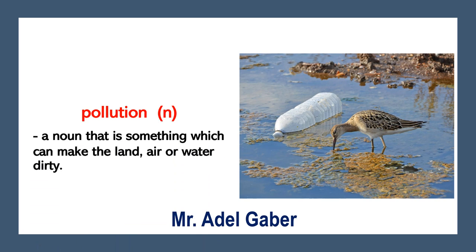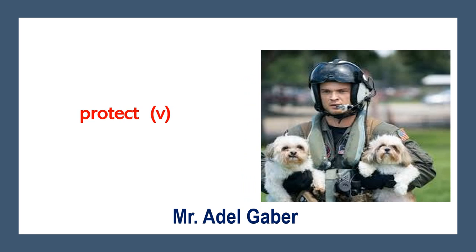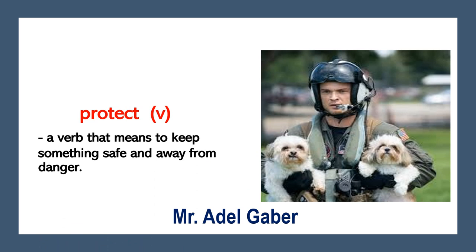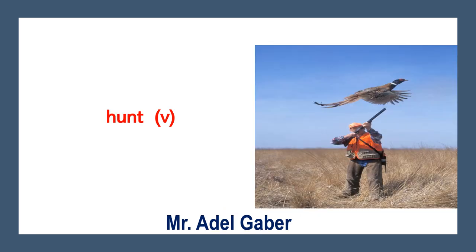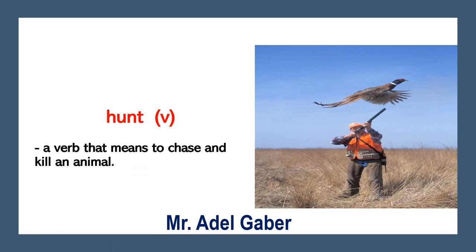Pollution is a noun — something which can make the land, air, or water dirty. Look at this picture: Protect. It is a verb that means to keep something safe and away from danger. Look at this picture — what is this man doing? He is hunting the bird. Hunt is a verb that means to chase and kill an animal.